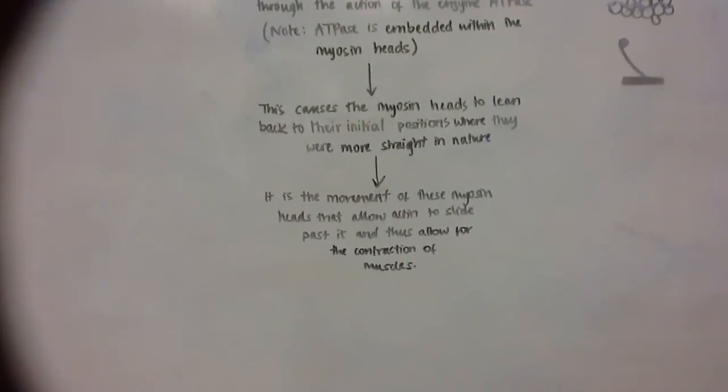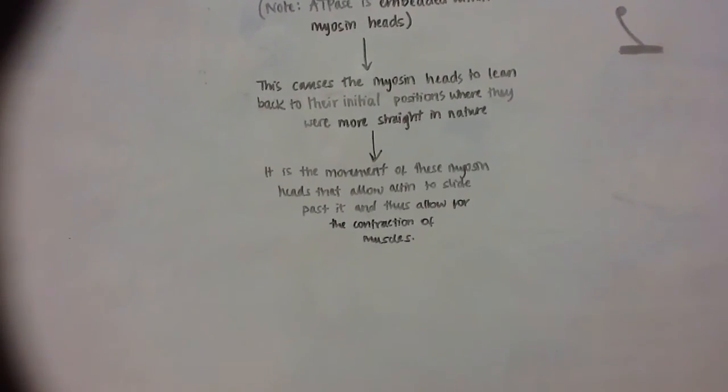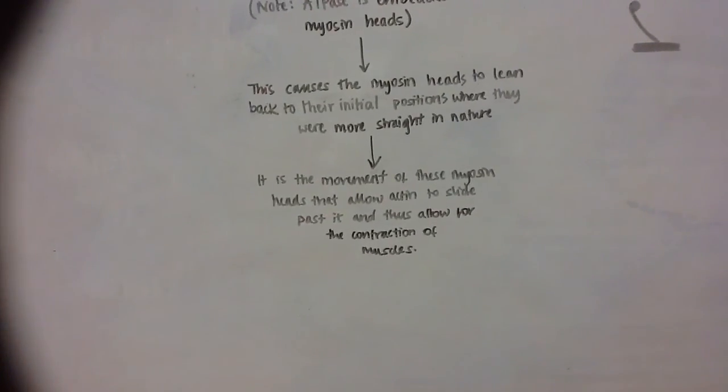And lastly, it's just the movement of these myosin heads that will allow actin to slide past myosin and thus allow for the contraction of muscle cells. Thank you.